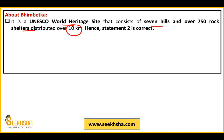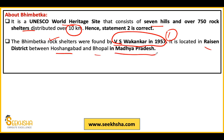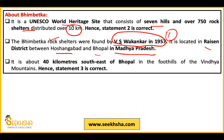In a 10 km radius lies the spread of the Bhimbetka rock shelters, discovered by V.S. Wakankar in 1957. It is located in Raisen District, between Hoshangabad and Bhopal, in Madhya Pradesh — about 40 km southeast of Bhopal, in the foothills of the Vindhya mountains. So statement 3 about Vindhya mountains is correct. This is very basic knowledge which you need to know.